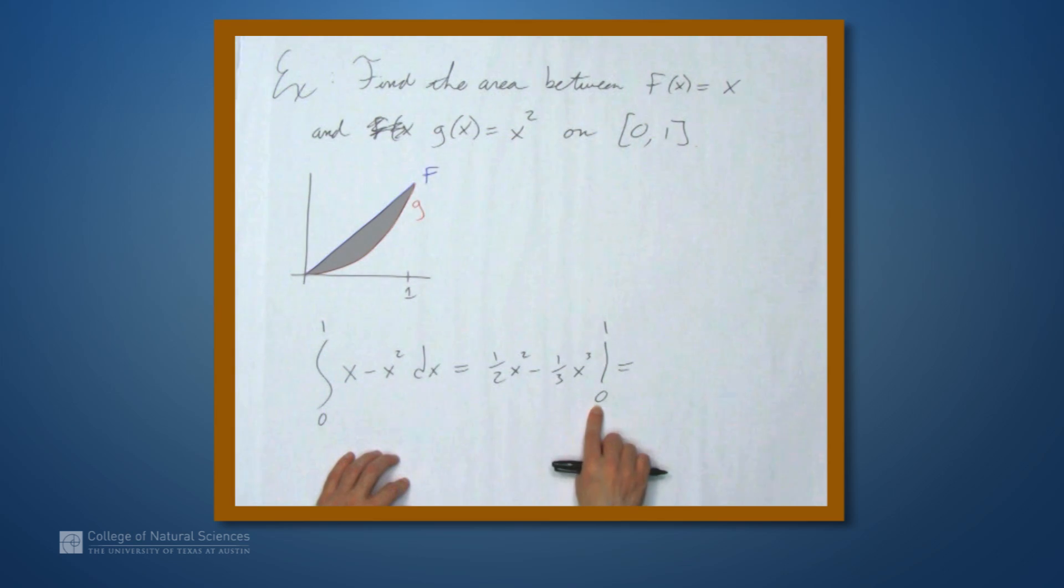Well, we don't have to worry about plugging in 0 because that makes both terms 0. When we plug in 1, we get 1 half minus 1 third, which is 1 sixth. So the area between f and g is 1 sixth.